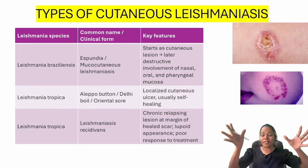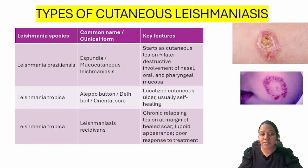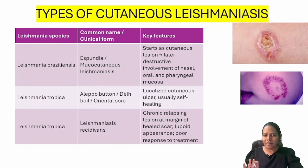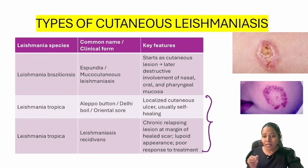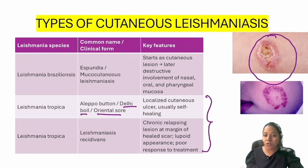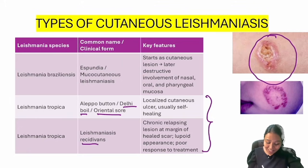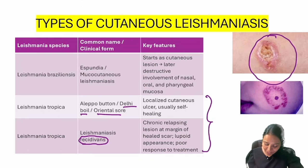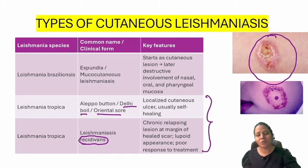Leishmaniasis can be cutaneous or visceral. Leishmania braziliensis causes espundia or mucocutaneous leishmaniasis — not seen in India, so unlikely to be asked. Leishmania tropica is seen in India and causes Delhi boil or oriental sore — a self-healing cutaneous ulcer. The same Leishmania tropica also causes leishmaniasis recidivans, where there is incomplete healing: the center heals but the periphery shows active lesions, usually due to incomplete treatment or poor response.